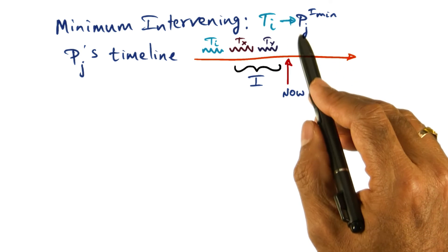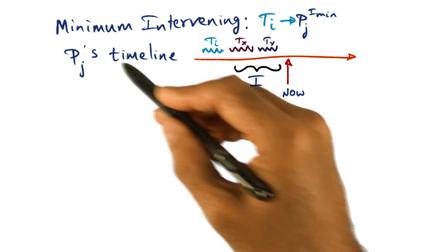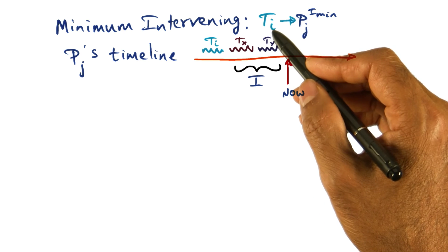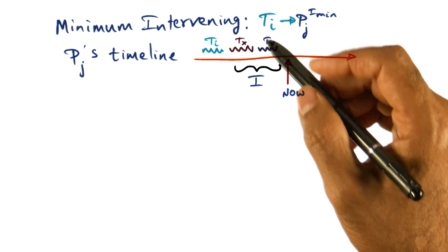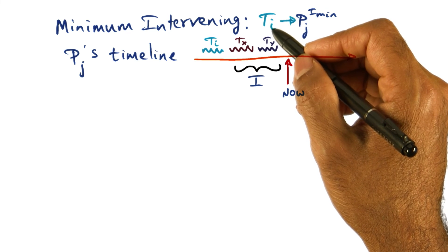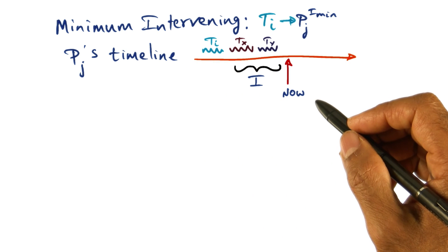So, the minimum affinity index indicates that there is a minimum number of intervening threads on that particular processor. That's the processor on which I want to run TI. That is amplifying the chance that TI is going to find its memory contents, the working set in the caches. That's the idea behind minimum intervening scheduling policy.